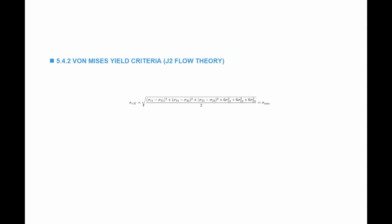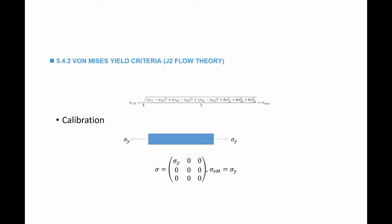The next is the von Mises yield criterion, also called the J2 flow theory. It states that a material will fail once the von Mises stress reaches a critical value, which I will call sigma max. To calibrate this material model, I take a piece of material to the lab, pull on it until it reaches sigma yield and fails. The stress state in this case is equal to sigma yield and everything else is 0. Substituting these values into the von Mises stress equation, I get that sigma von Mises is equal to sigma yield. Therefore, sigma max is equal to sigma yield.